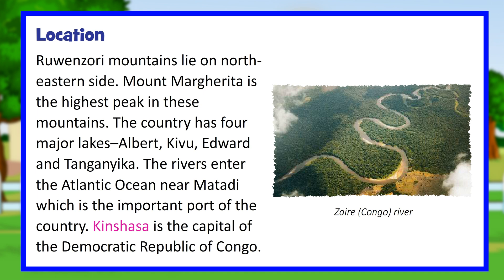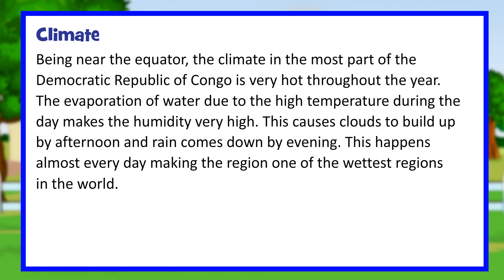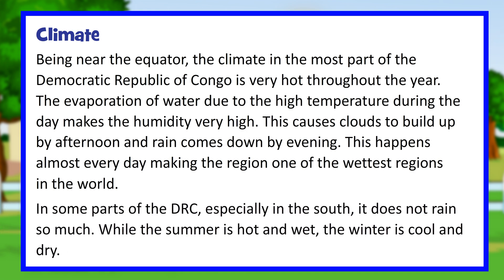Kinshasa is the capital of the Democratic Republic of Congo. Being near the equator, the climate in most parts of the DRC is very hot throughout the year. The evaporation of water due to high temperatures during the day makes the humidity very high, causing clouds to build up by afternoon and rain to come down by evening. This happens almost every day, making the region one of the wettest regions in the world. In some parts, especially in the south, it does not rain so much, and while the summer is hot and wet, the winter is cool and dry.